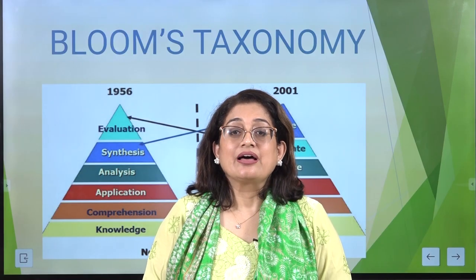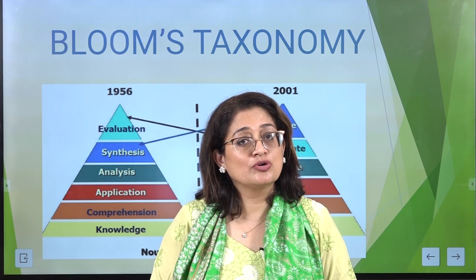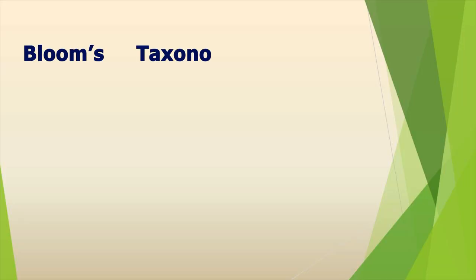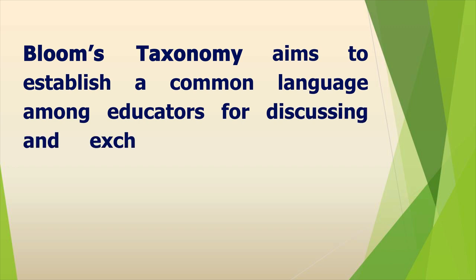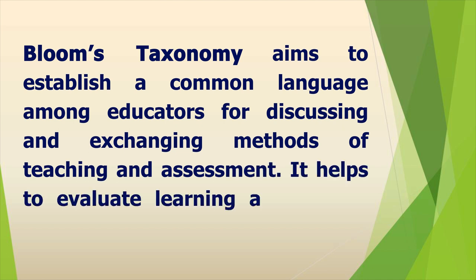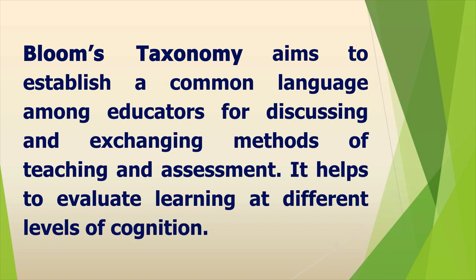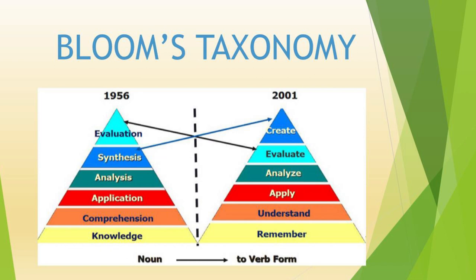To assess the progress of learning of a student, we may refer to Bloom's Taxonomy. Bloom's Taxonomy aims to establish a common language among educators for discussing and exchanging methods of teaching and assessment. It helps to evaluate learning at different levels of cognition. As can be seen, the different levels of cognition — that is, understanding and reasoning — are understood through this pyramid illustration. Let us use an example to comprehend how Bloom's Taxonomy allows us to assess the cognition level of our students.